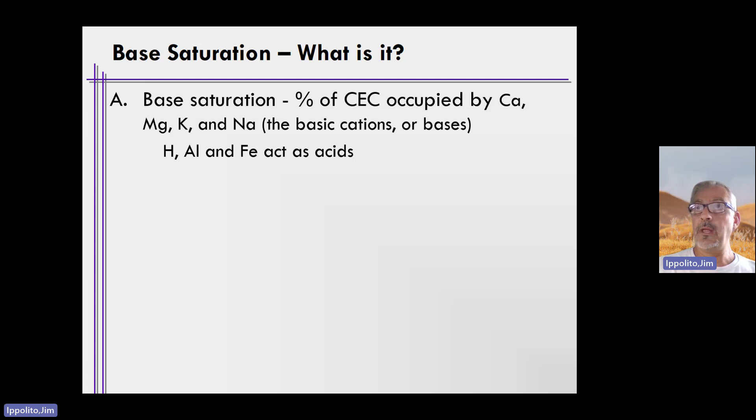When we look at the cations that are on the exchange sites, they're typically dominated by calcium, magnesium, sodium, potassium, hydrogen, and aluminum depending on pH. We need to account for all the cations on the exchange sites to determine CEC.